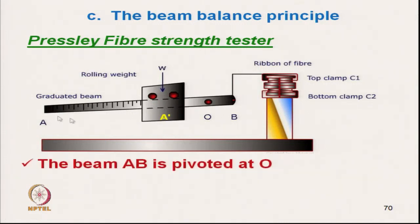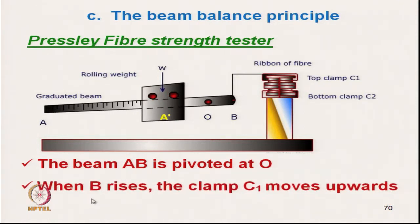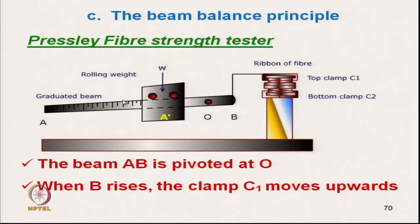The beam AB is pivoted at O. When B rises, the clamp C also moves up. This is connected such that the bottom clamp is fixed and the top clamp is connected with B. As the load slides down it is increasing, it will apply a downward force. So B will always tend to move upward and it will apply force.